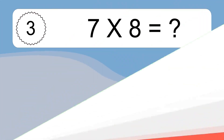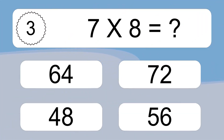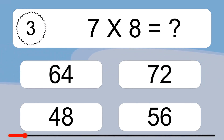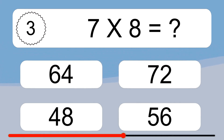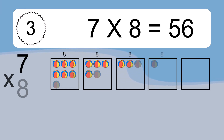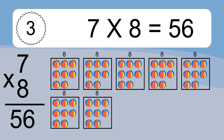7 times 8 equals what? 7 times 8 equals 56.